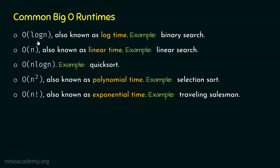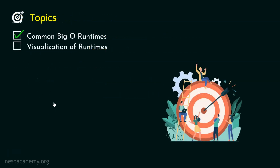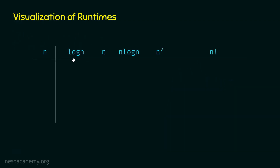To visualize the runtimes, we will draw a table. Remember, whatever we write within big O is treated as the number of operations — so log N, N, N log N, N², and N! represent the number of operations. The first column represents N, the size of the input. Now let's plug in different values of N into these operations.